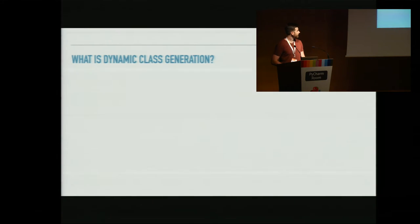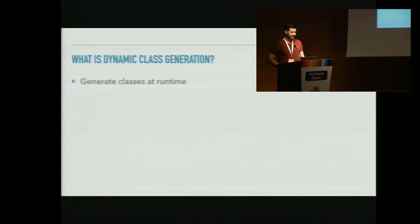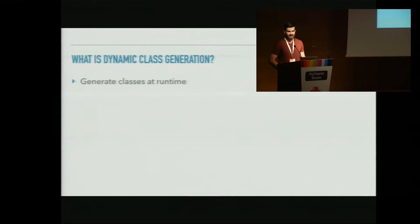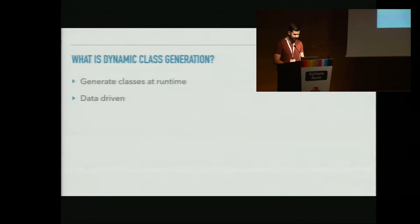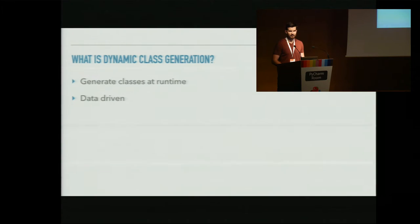Let me start by answering the question: what is dynamic class generation? The pattern is to generate classes at runtime, so all the functionality or definition of a specific class doesn't exist in the source code — it gets generated as the program runs. Because the class doesn't exist in source code, the functionality needs to be generated from somewhere else, in most cases some other data source such as a schema or API model.